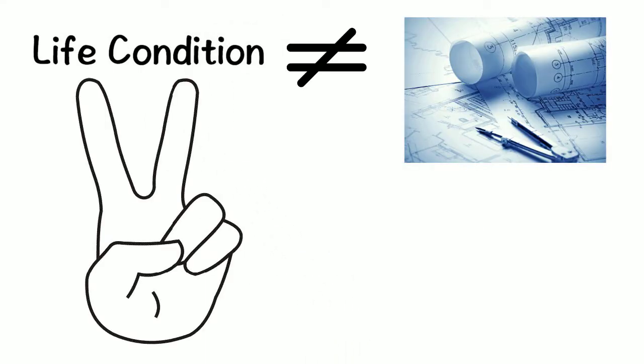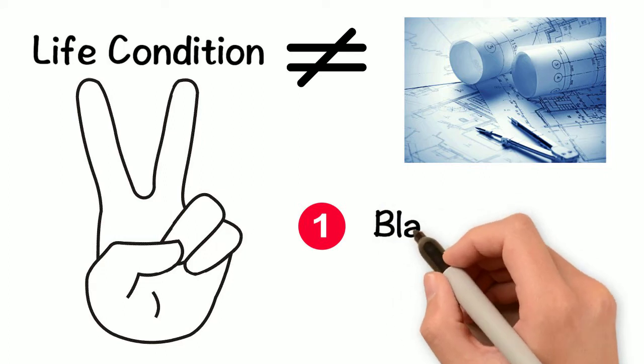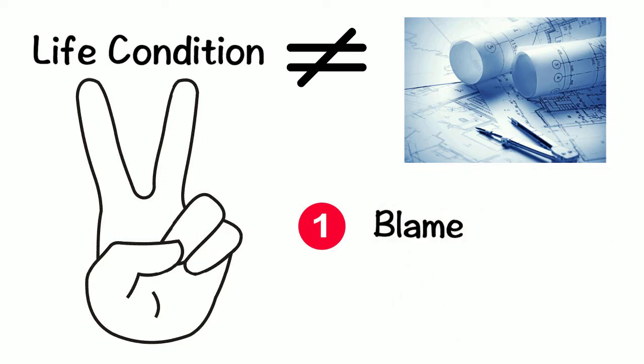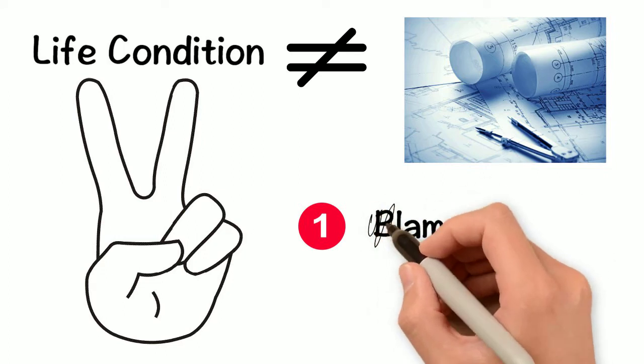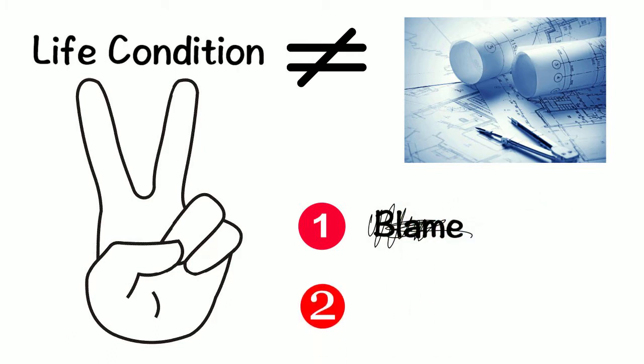When our life condition does not match our life blueprint, there are two things we can do about it. We can blame something, someone else, or ourselves, which does not work. Or, we can change.